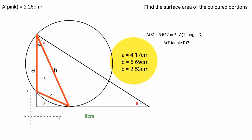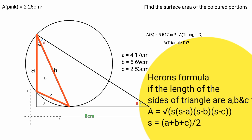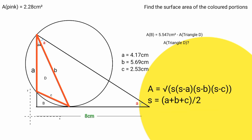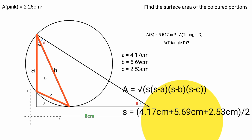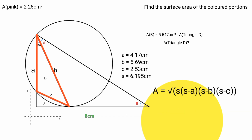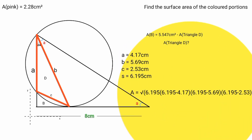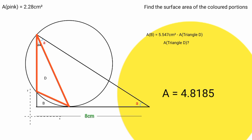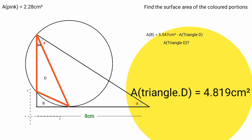To find the surface area of triangle D, we apply Heron's formula. Where all lengths are A, B, C: area equals square root of S(S−A)(S−B)(S−C), where S equals (A+B+C)/2. So S equals (4.17 + 5.69 + 2.53)/2 equals 6.195 cm. Substituting: area equals square root of 6.195 times (6.195−4.17) times (6.195−5.69) times (6.195−2.53), which equals approximately 4.819 cm squared.